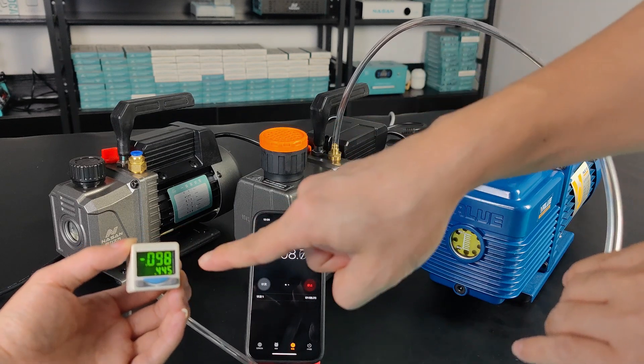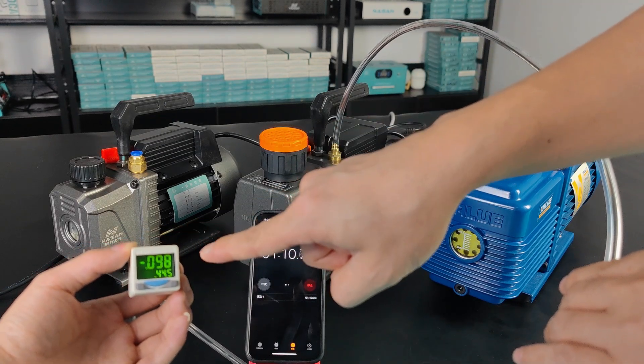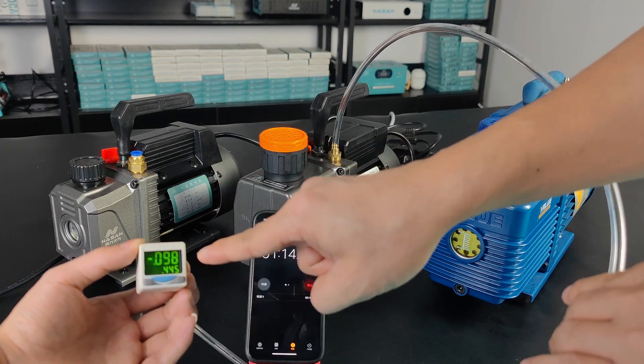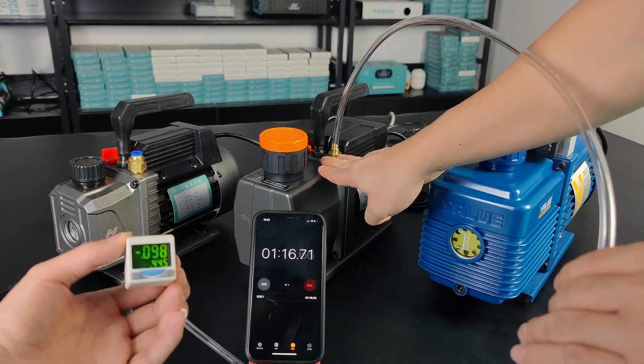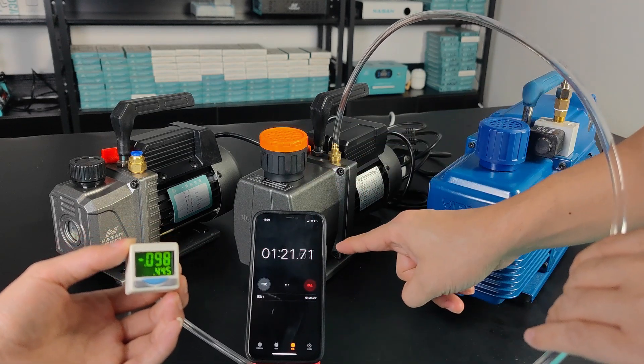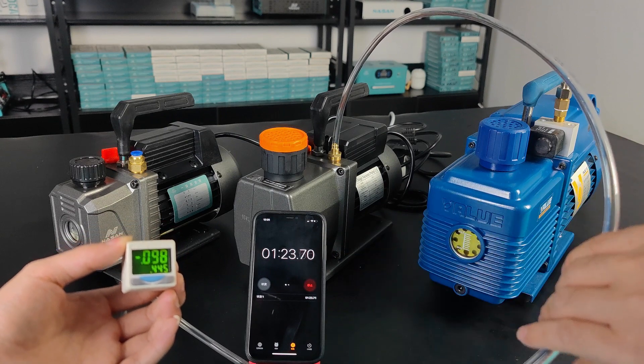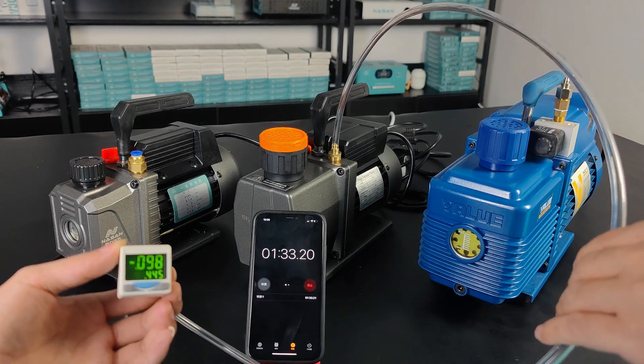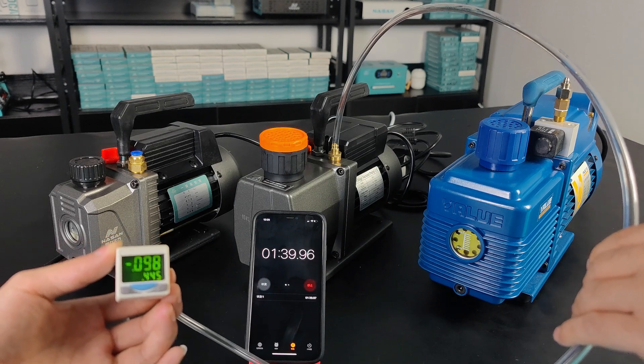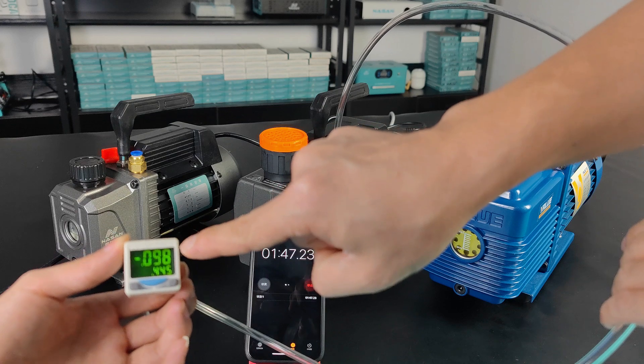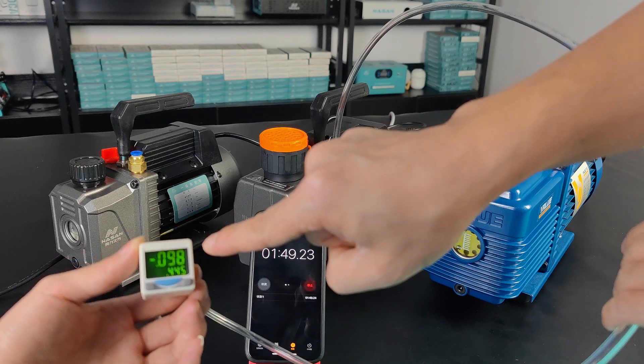We can see that it's jumping a little bit from 98 to 99, but it's stable at 98. This one is two liters. I'm going to put it here to keep running for about 30 seconds. Now we can see that the number is stable at 98.